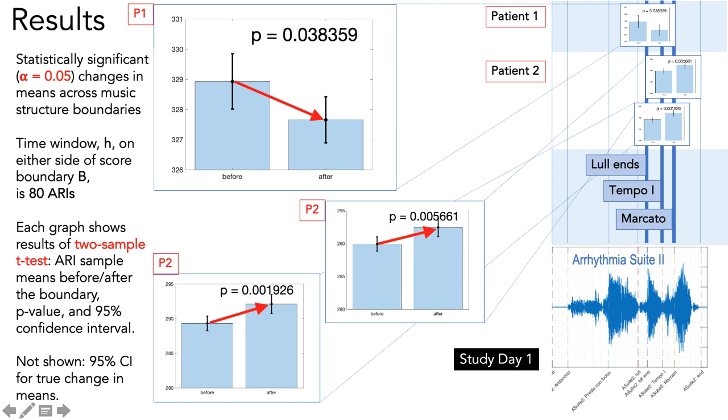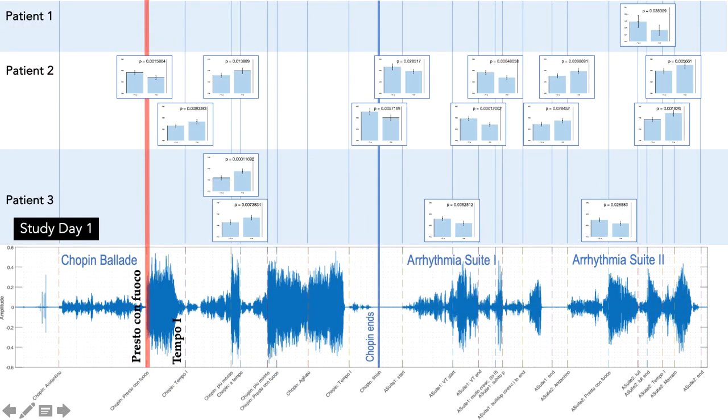This represents quite a challenge when we try to undertake an analysis of the effect of the music changes on the ARI through the piece. These histograms illustrate changes in ARI which were statistically significant across different boundaries in the music.